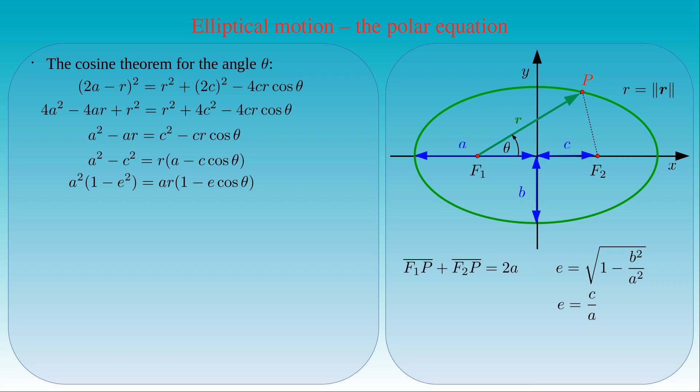We solve this equation for R, which gives the distance R of the point P from the focal point F1 as a function of the angle theta. This function is called the polar equation, and states that the distance R is equal to A times 1 minus E squared, divided by 1 minus E times cosine theta.